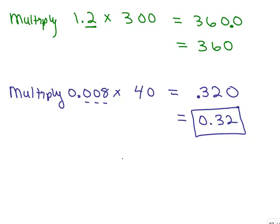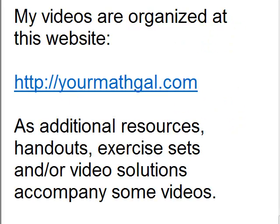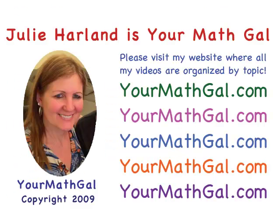All right, so that's really all there is to multiplying with decimals. You simply multiply and then you have to make sure that your final answer has the right number of digits after the decimal point based on the original two numbers. Please visit my website at yourmathgal.com where you can view all of my videos which are organized by topic.